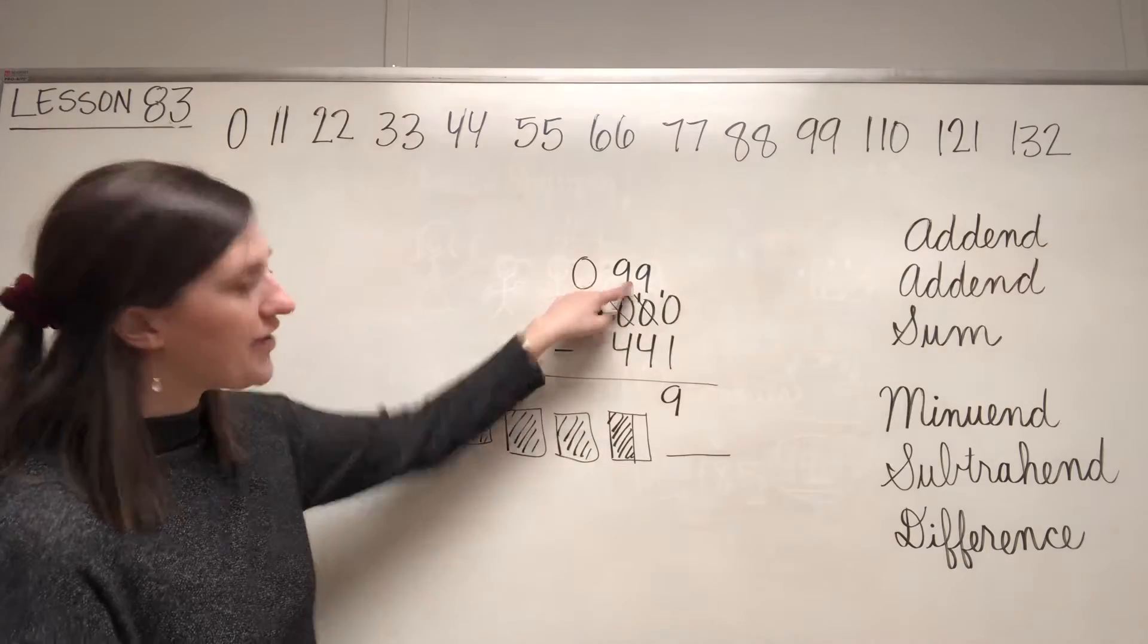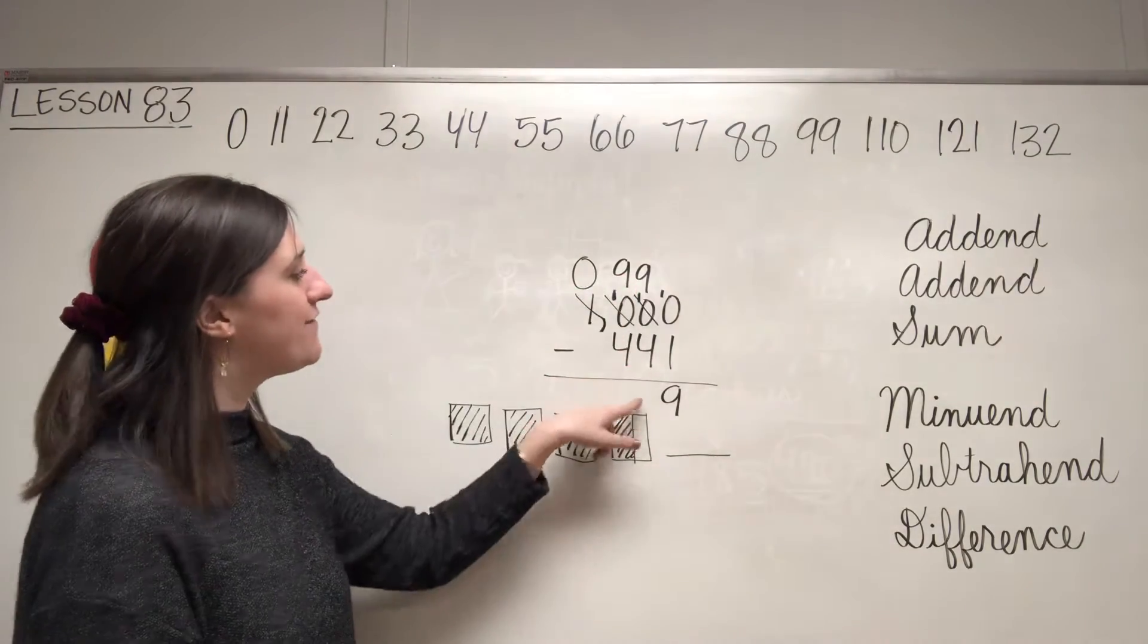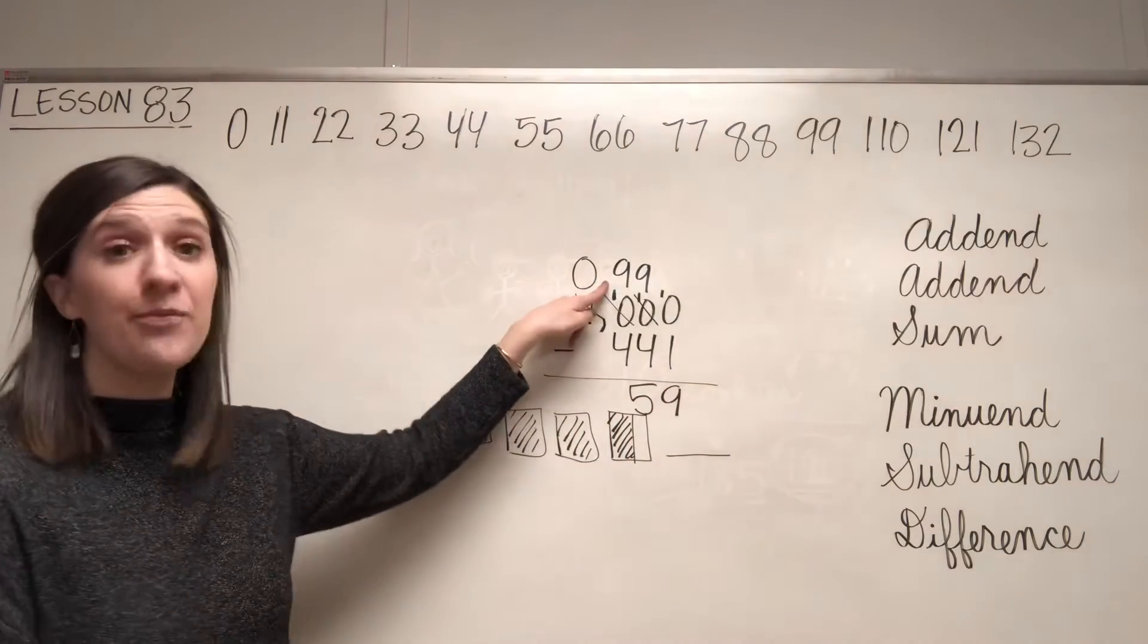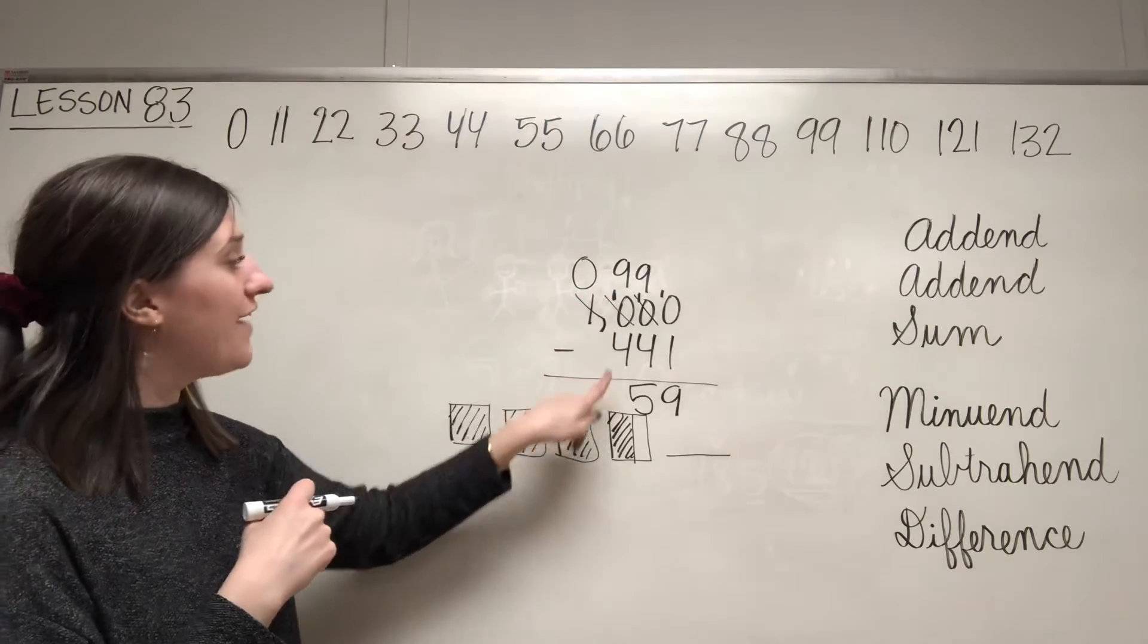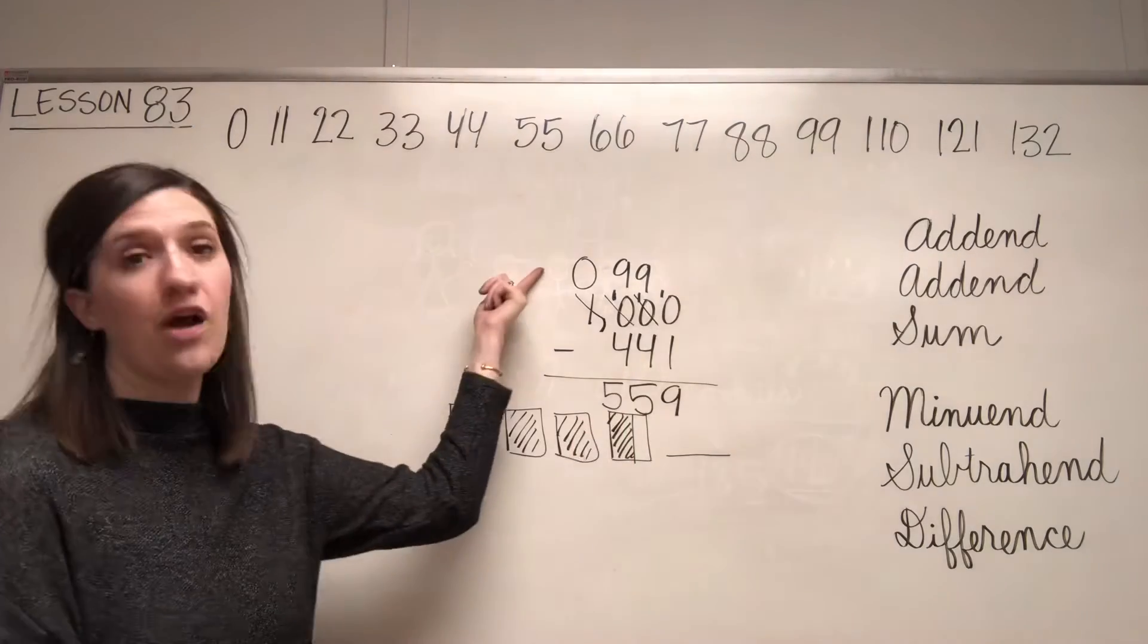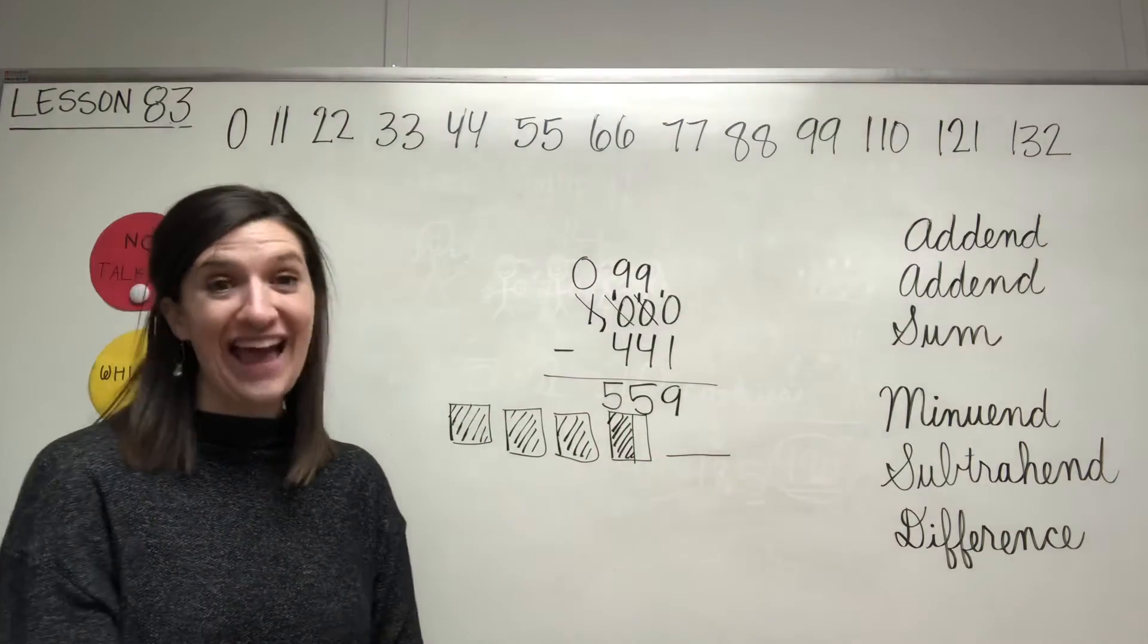Is the big number on top? Yes. Subtract. Nine, five. Is the big number on top? Yes. Subtract. Nine, five. This is a zero so we just leave that out there, right? The answer is 559.